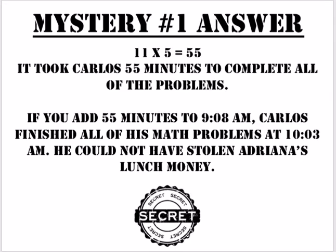Mystery clue number one answer: 11 times 5 equals 55. It took him 55 minutes to complete all of the problems. If you add 55 minutes to 9:08 a.m., Carlos finished all of his math problems at 10:03 a.m. He could not have stolen Adriana's lunch money.